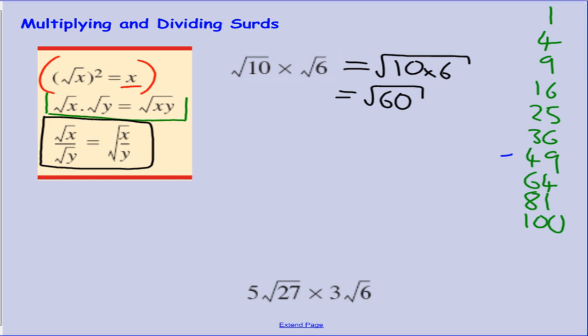49 definitely doesn't go in. 36 cannot. 25 cannot. 16. Can 16 go into 60? No, it cannot. 9. Can 9 go into 60? No. What about 4? Can 4 go into 60? Yes. 4 is our factor. We need to write our next line.